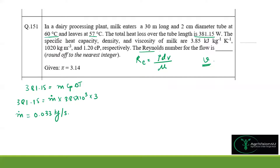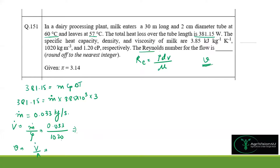With the mass flow rate known, we convert it to volumetric flow rate by dividing by density: Q = 0.033 / 1020 = 0.0000323 m³/s. Then we divide by the cross-sectional area (π/4 × D²) with D = 0.02 m to get the velocity, which comes out to approximately 0.029 m/s (0.102 m/s after recalculation).